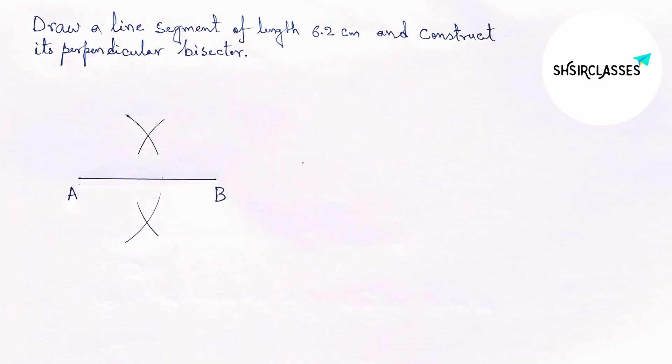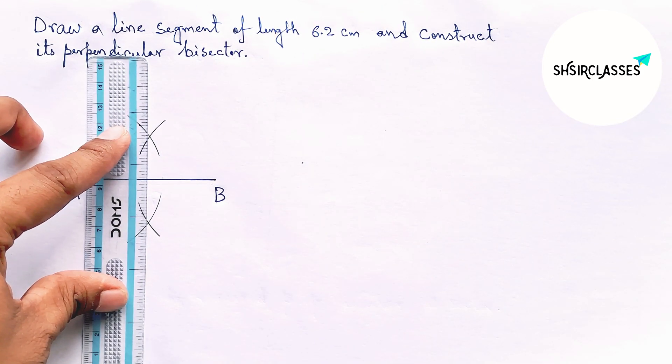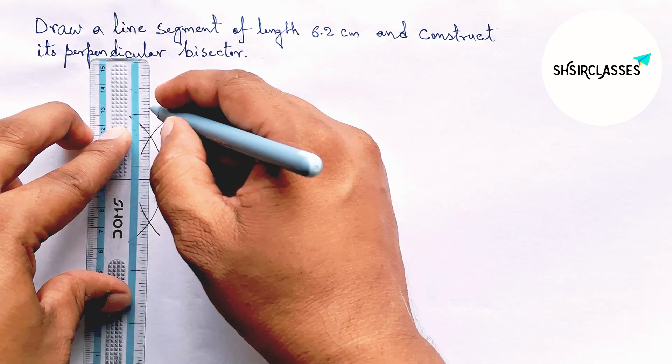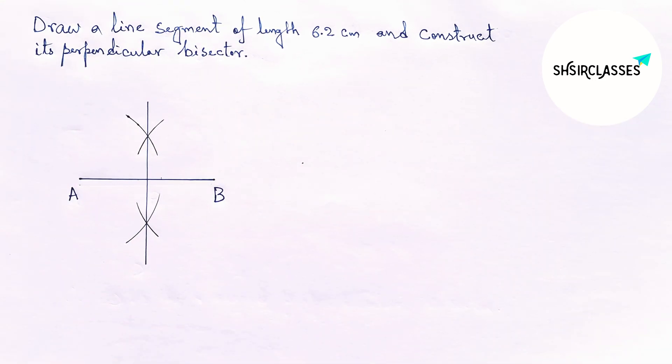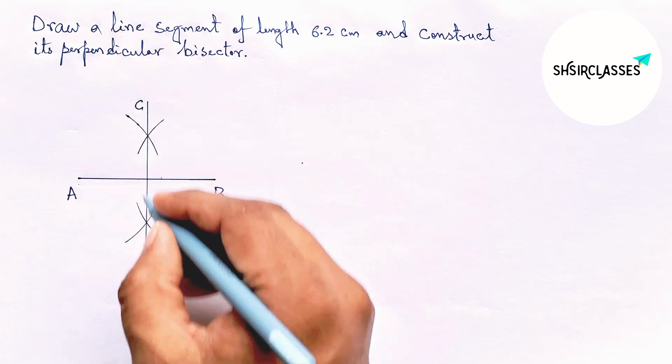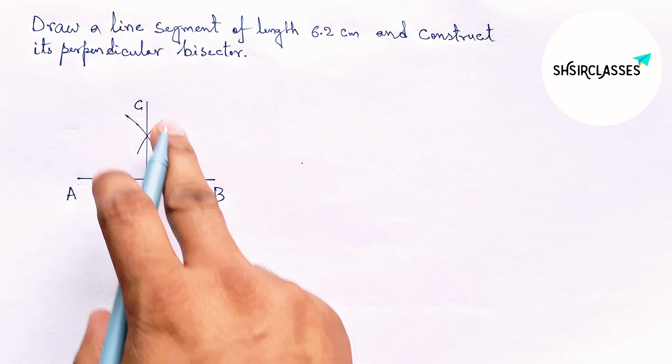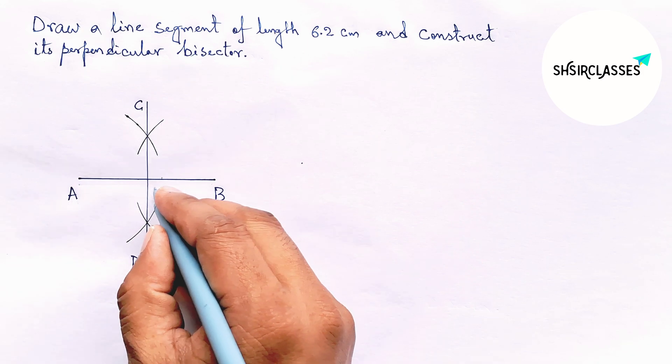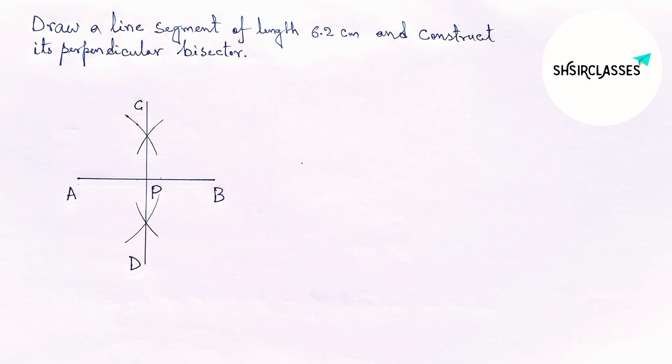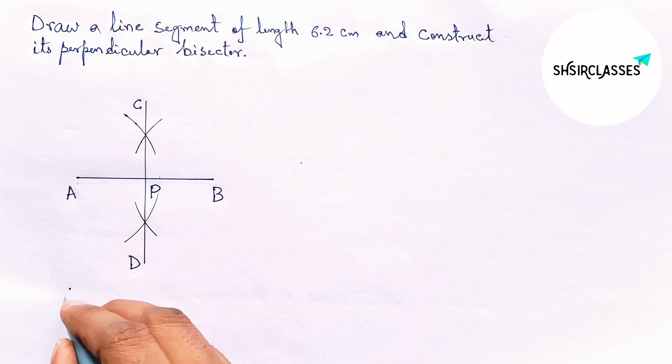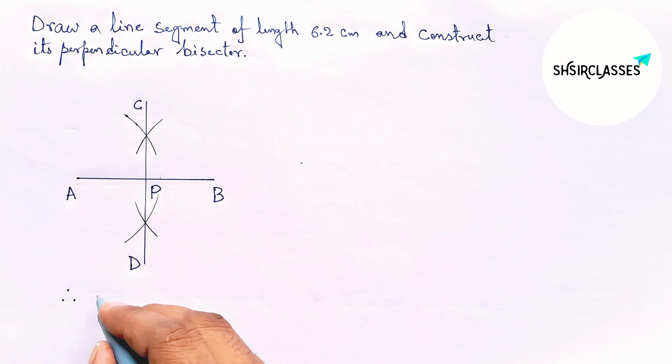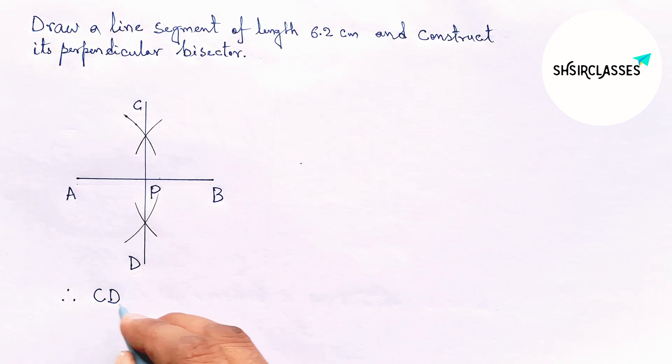Now joining this, and this is the required perpendicular bisector. So labeling here C and here D. AB and CD both meet here at a point, so marking here point P. Therefore, CD is the required perpendicular bisector.